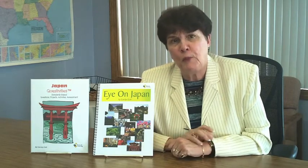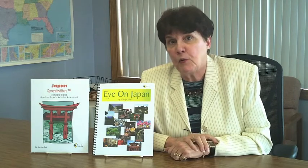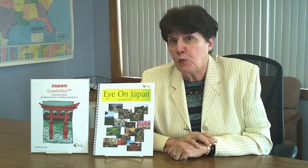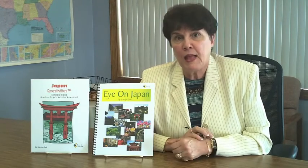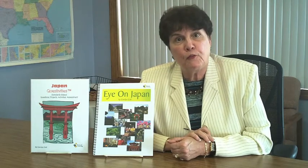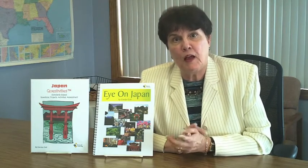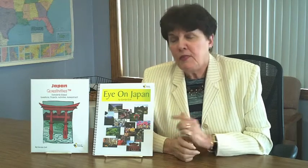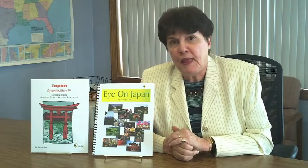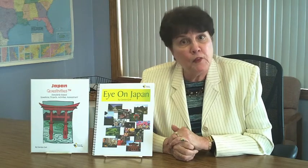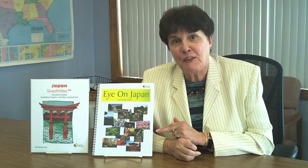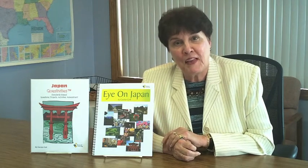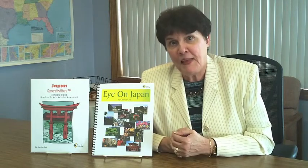You could call Eye on Japan a primary resource. In this age of Common Core standards where we want students to analyze, think about, and reflect upon sources from many different points of view, this is a very good way to begin. The Common Core standards deal with informational texts and Eye on Japan is most certainly an informational text. It is a first-person account from my eyes as the author of how you travel through Japan.